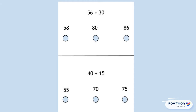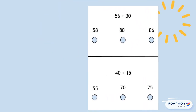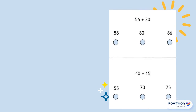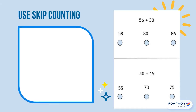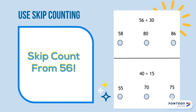Let's go ahead and practice with the top problem: 56 plus 30. This problem is a good example of how we can use skip counting to help us. We don't need to skip count starting at a 10, a 5, or a 2. We can skip count from any number. So for this problem we're going to start at 56.